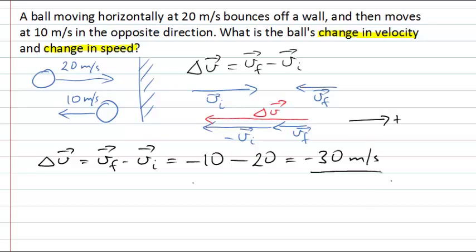Again, some students find that strange that we seem to have added those two velocities, the 20 and the 10, to come up with 30. We haven't. We've added the two vectors, and because they were in opposite directions in one dimension here, we actually end up adding the magnitudes. But we have definitely taken the difference of the two vectors.